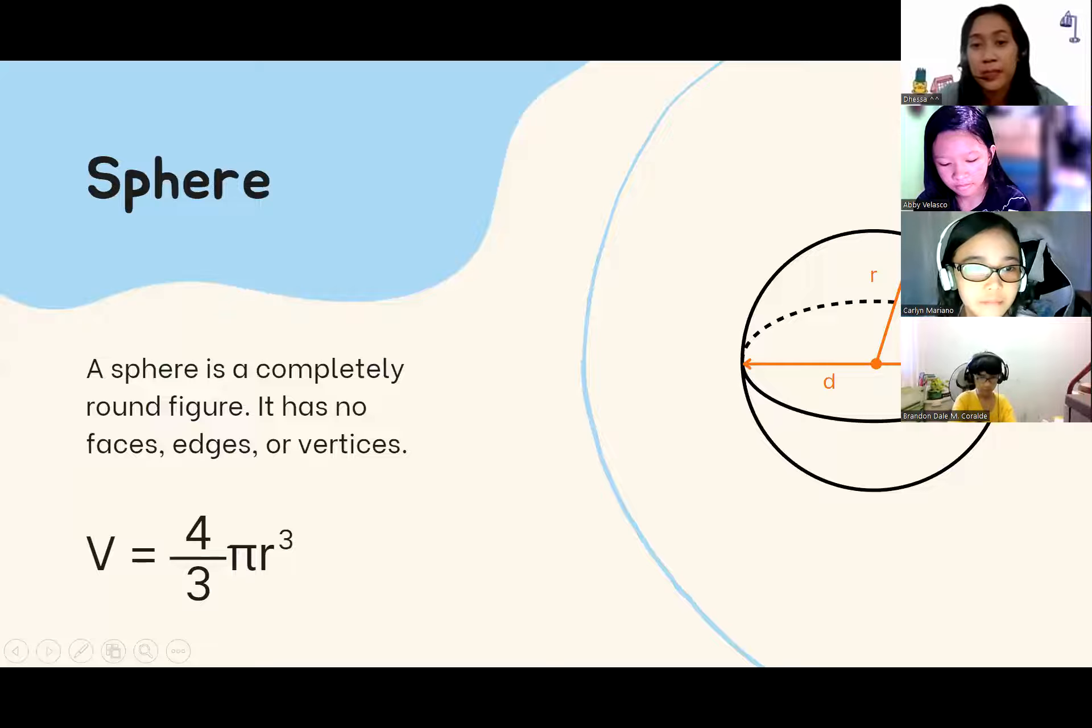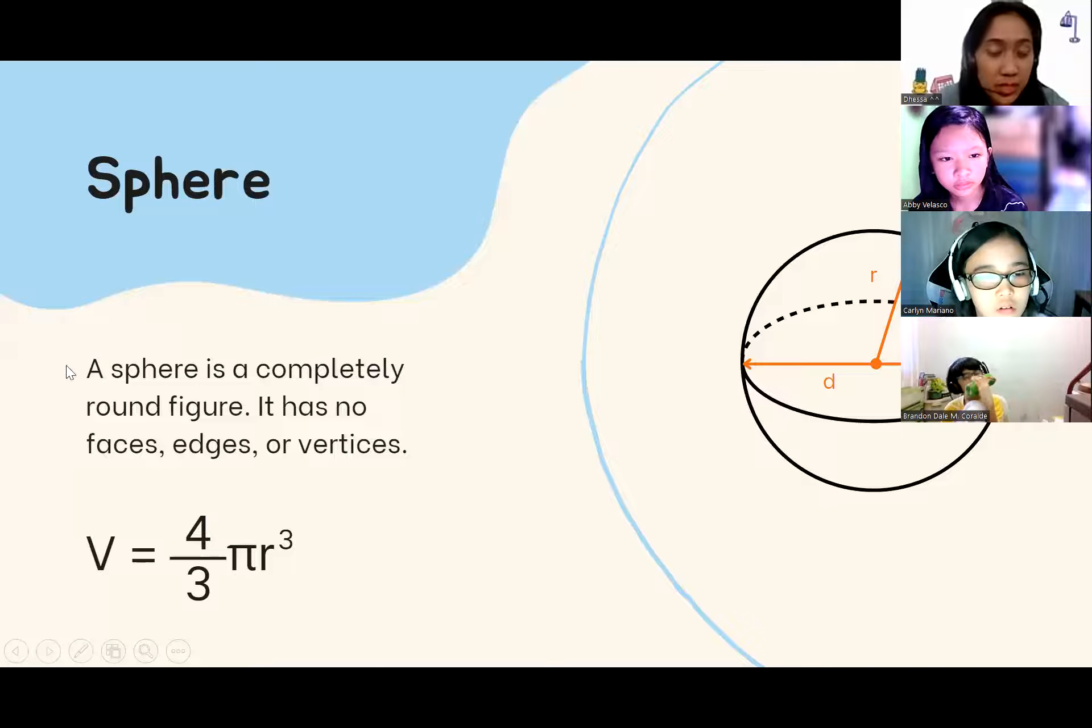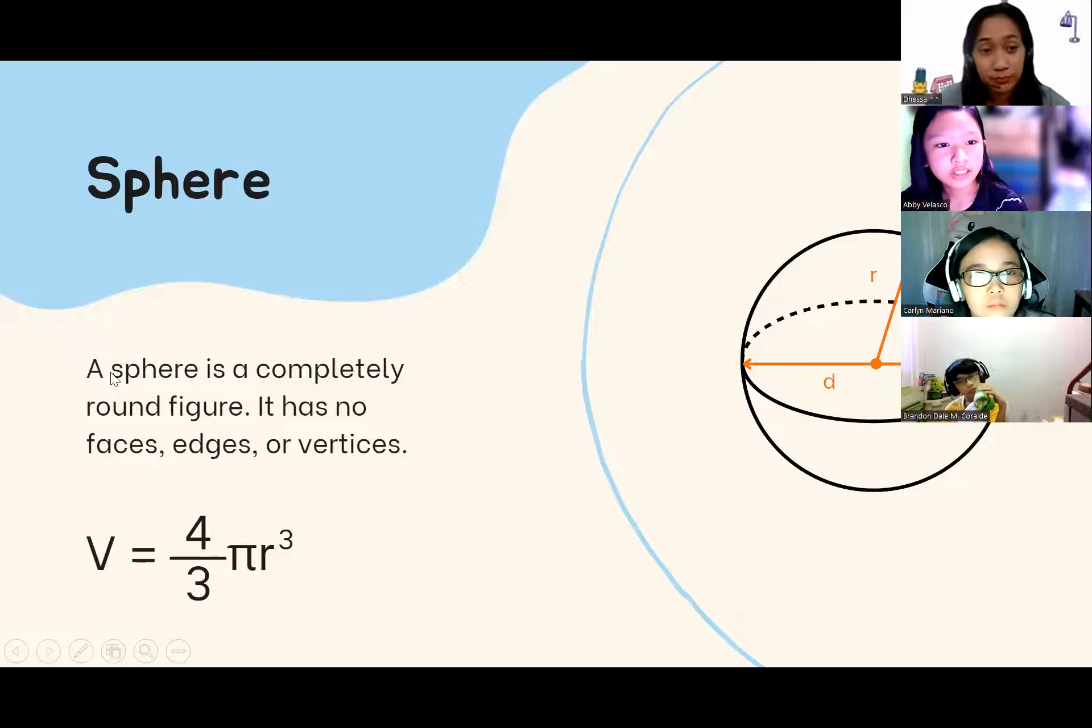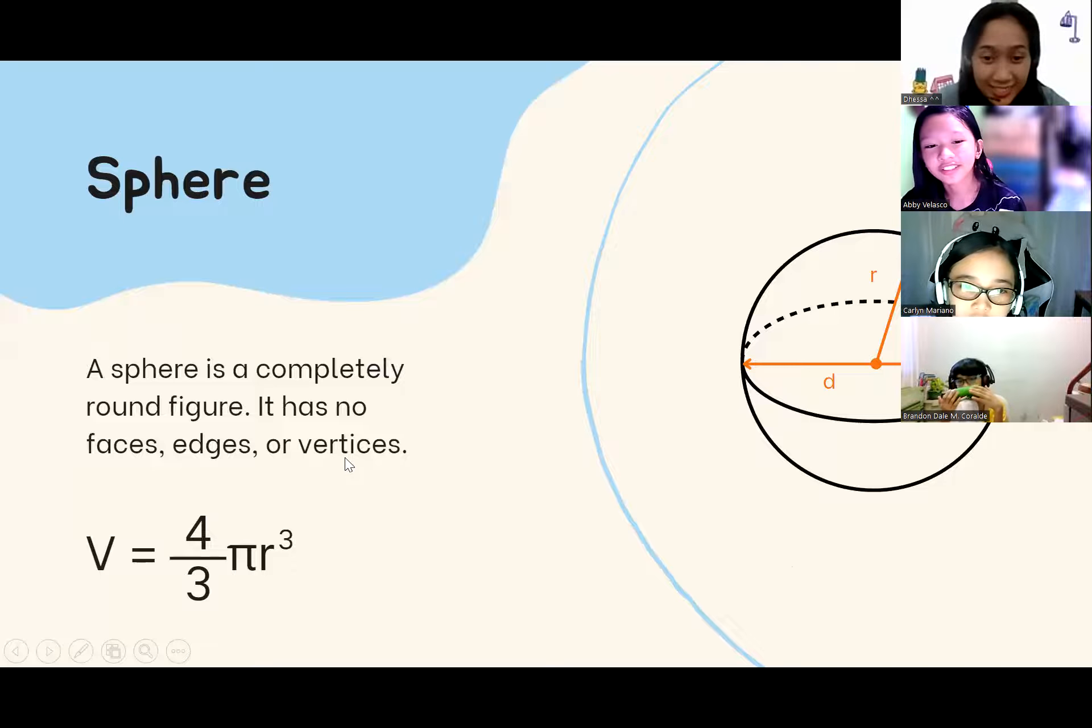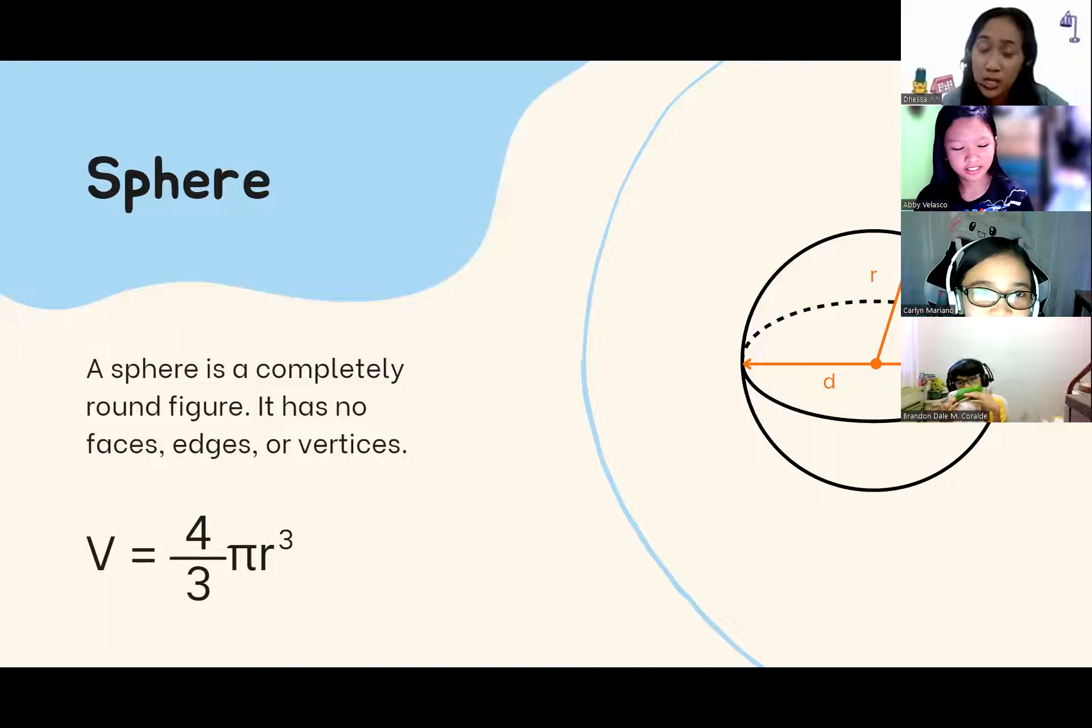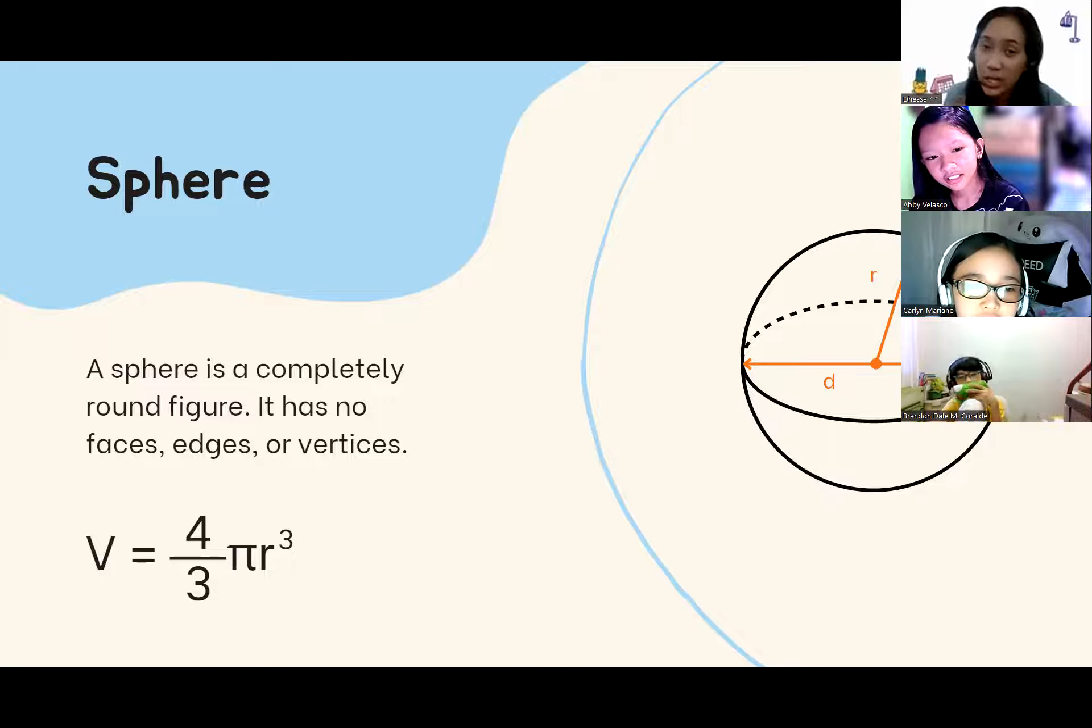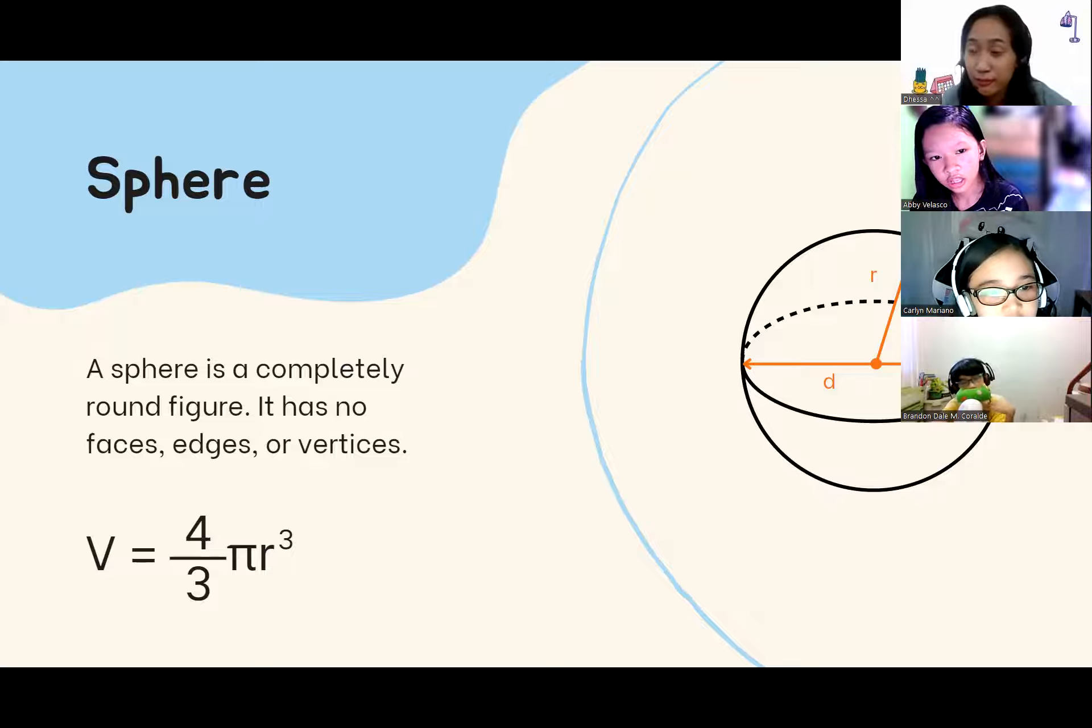So, the first 3D we have is sphere. Abby, please read. A sphere. A sphere is a completely round figure. It has no faces, edges, or vertices. Vertices. Yes, it's fine. It's fine. Vertices. So, if the 3D is sphere, what's the 2D of this? 2D. Circle. Circle. Very good. So, it's plane to circle, but if it's have the volume already, it is sphere.